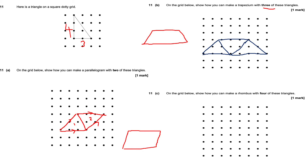For part C: on the grid below, show how you can make a rhombus. A rhombus is like a tilted square, so the side lengths are going to be the same. I'm going to go up three and go across three.